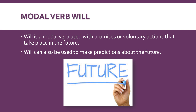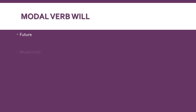This modal verb will indicates future, and it is a modal verb which has four main characteristics. First, it is used for all pronouns the same. The verb that indicates the action goes in the infinitive form. It indicates a mode — in this case future — and finally it works as its own auxiliary.